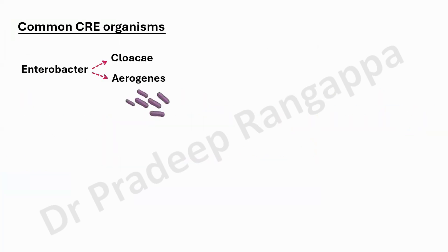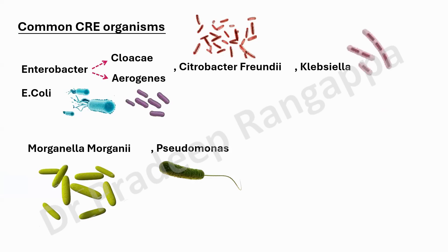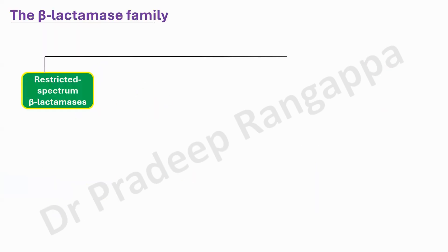Just to rewind our memory: the common CRE organisms are Enterobacter cloacae/arogenes, E. coli, Citrobacter, Klebsiella, Morganella, Pseudomonas, and Serratia. These are the commonest CRE, and they can produce OXA, KPC, NDM, metallo-beta-lactamases, and more.